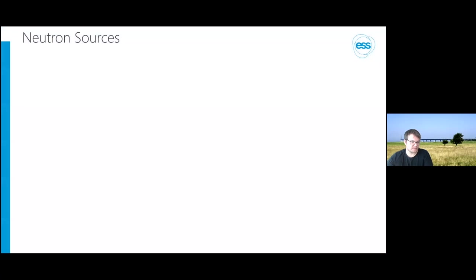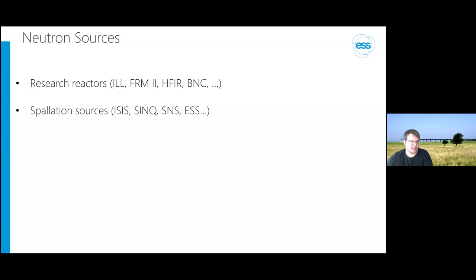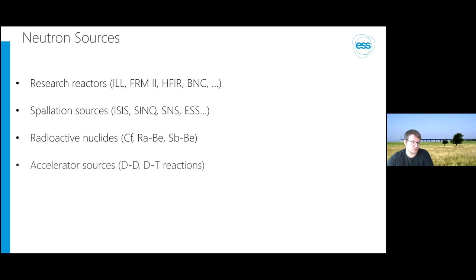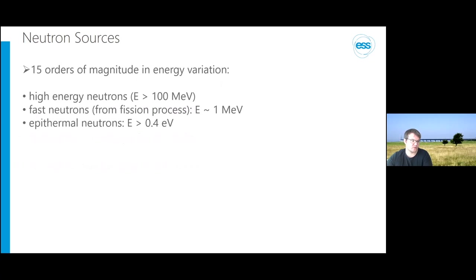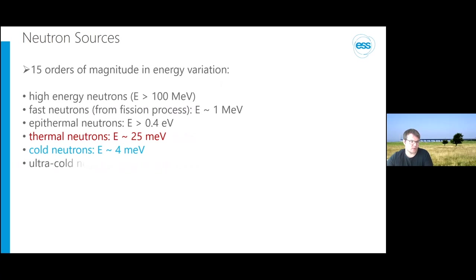Neutron sources can be research reactors, spallation sources, radioactive nuclide laboratory sources, or other accelerator sources. What's really important is the difference in neutron energy — there's a huge variation of 15 orders of magnitude, from high-energy fast neutrons through epithermal to thermal neutrons, where diffraction, scattering, and imaging become interesting, and then cold and ultra-cold neutrons. In imaging we typically talk in wavelengths rather than energy, with a wavelength range of roughly 1 to 10 angstroms, corresponding to an energy regime between 1 meV and 100 meV.